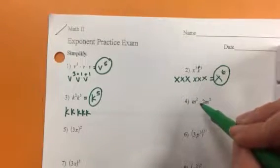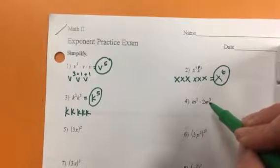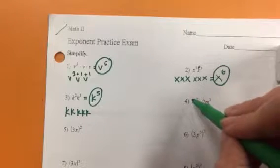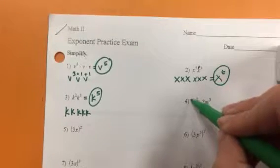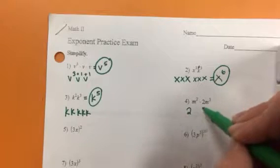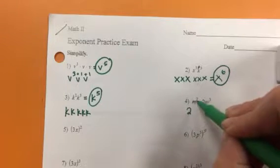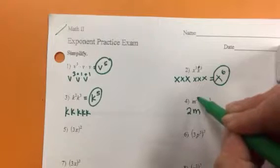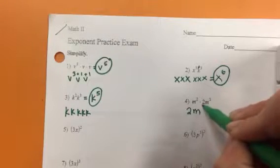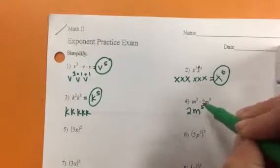We have m squared times 2m cubed. The number in front of the m squared is a one. One times two is two, so it just hangs out in front. Then I count up how many m's I have. I have two here and three there, so a total of five.